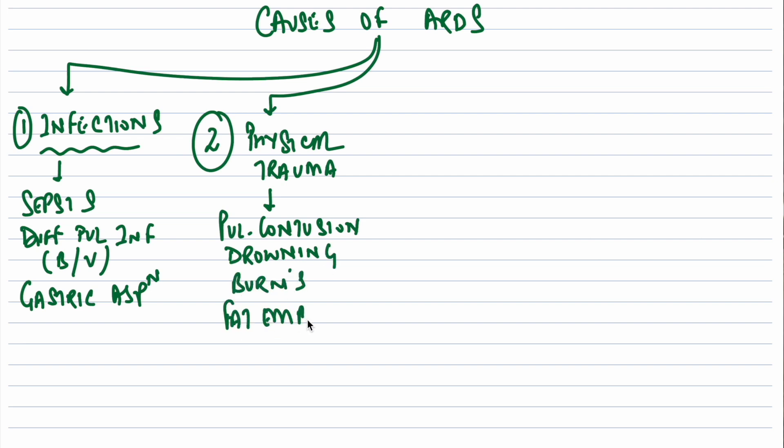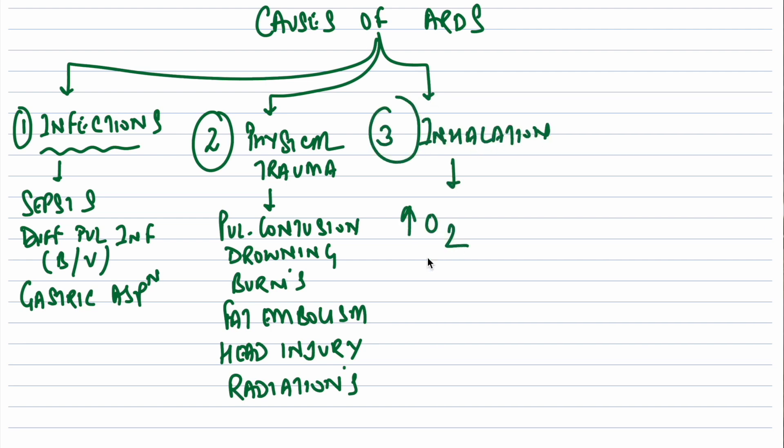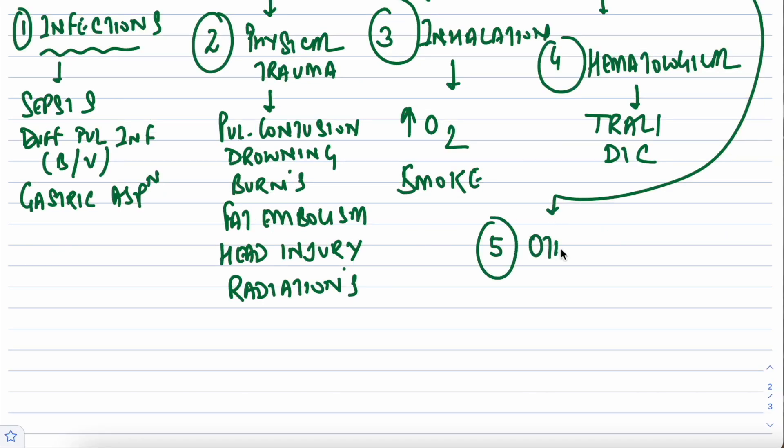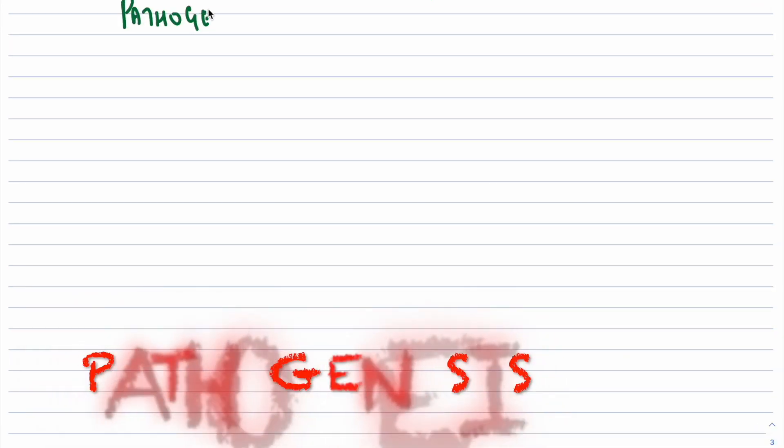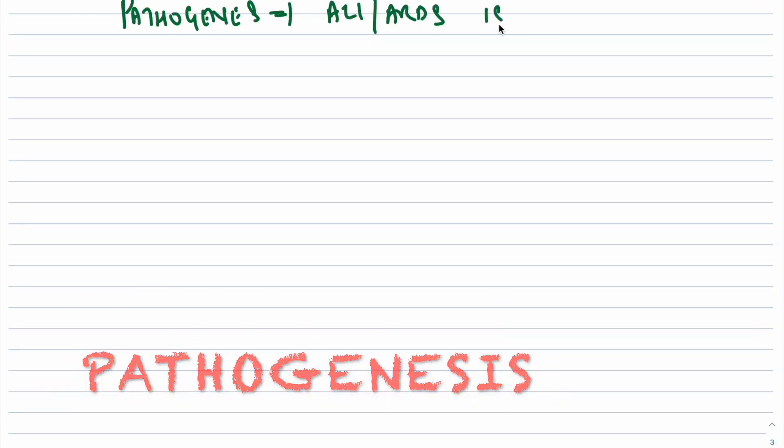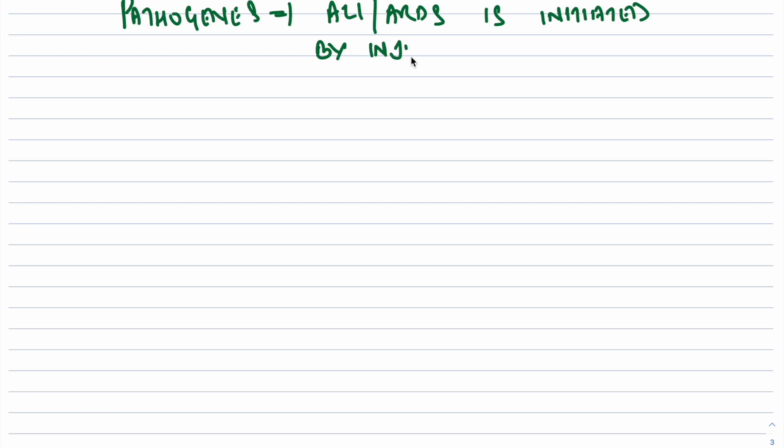Causes include infections like sepsis and diffuse pulmonary infections, gastric aspiration, physical trauma like pulmonary contusions, drowning, burns, fat embolism, head injuries, radiation, inhalation of excessive oxygen or irritants like smoke, hematological conditions like TRALI and DIC, and other systemic conditions including shock, pancreatitis, uremia, hypersensitivity reactions, chemical injury, and drugs.